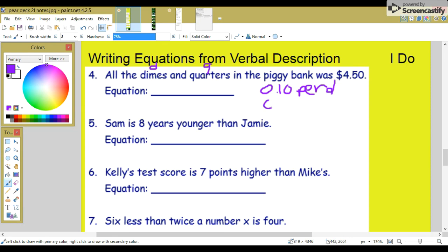And quarters are twenty-five cents. So .25 per q. So our equation is going to be .1d plus .25q equals 4.50.